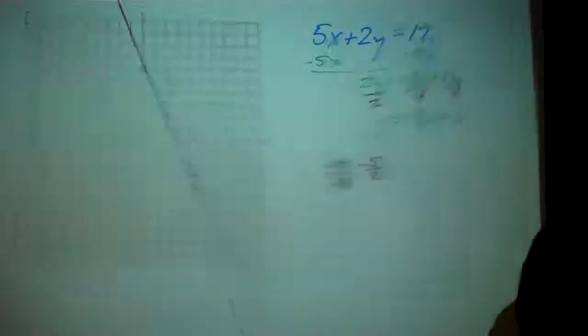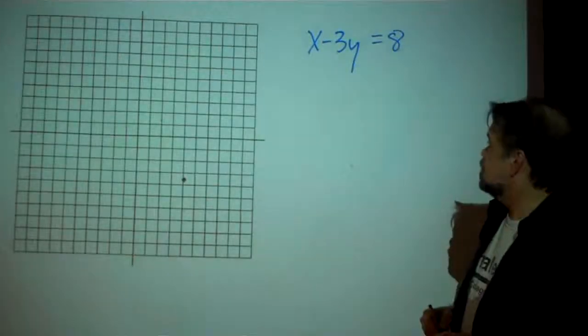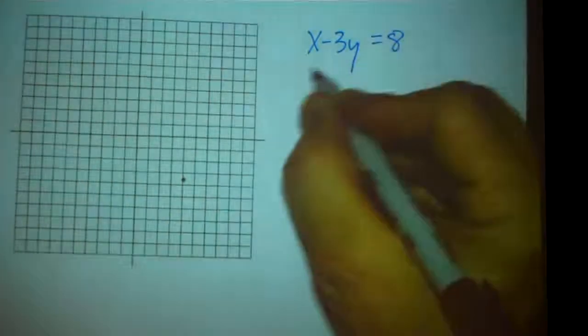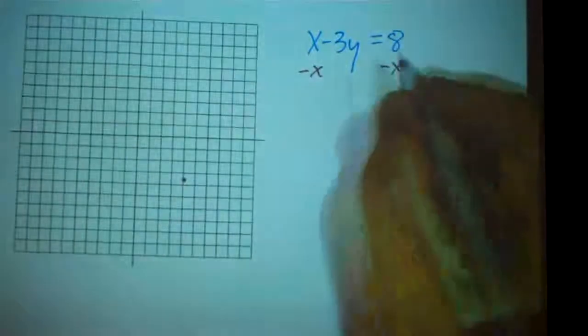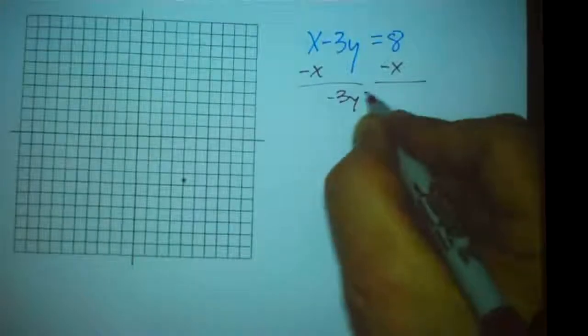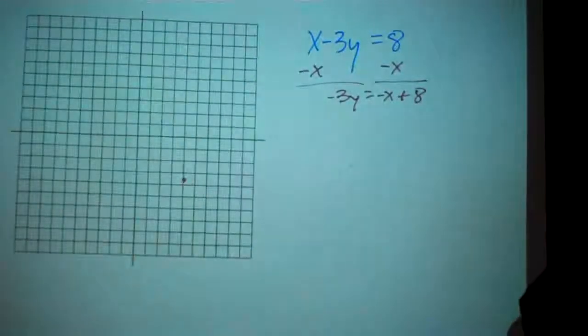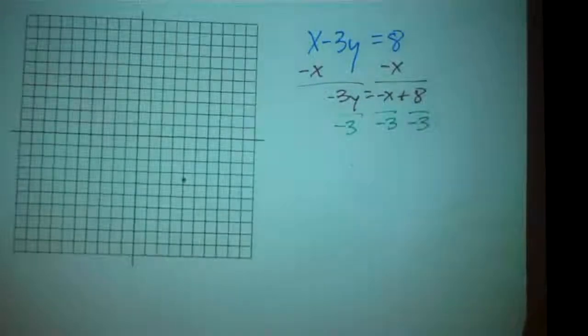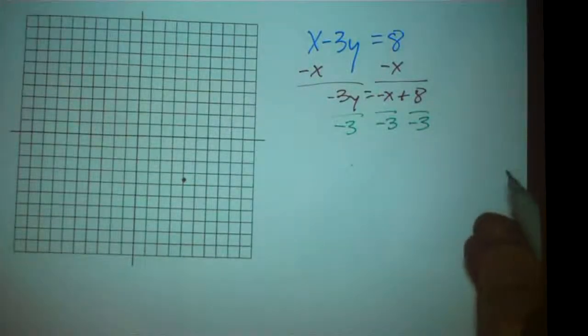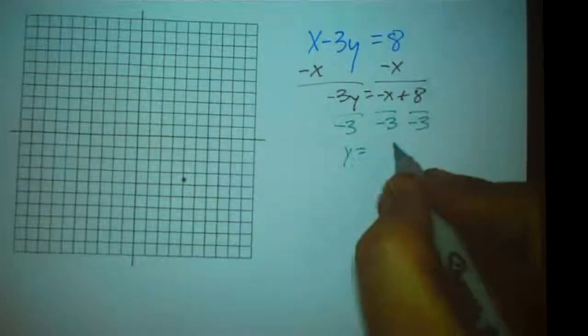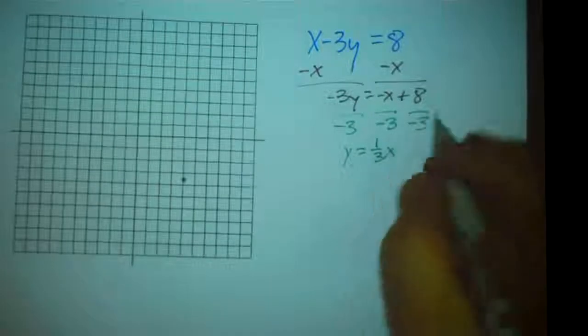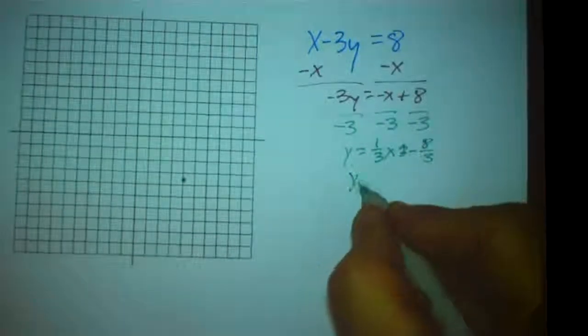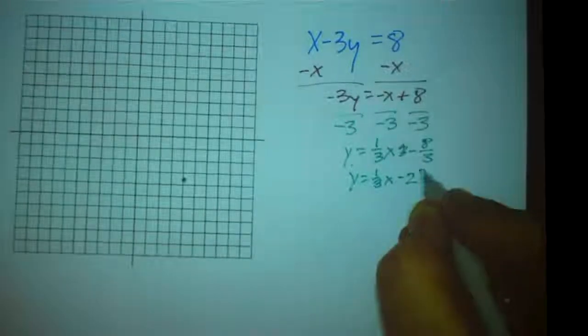Let's look at another example. 7x minus y equals 8. Well, let's do the same thing. Let's subtract x from both sides, and we get negative 3y equals negative x plus 8. And now I'm going to divide everything by negative 3, and I get y equals 1 third x minus 8 thirds. Or I guess I could write this y equals 1 third x minus 2 and 2 thirds.